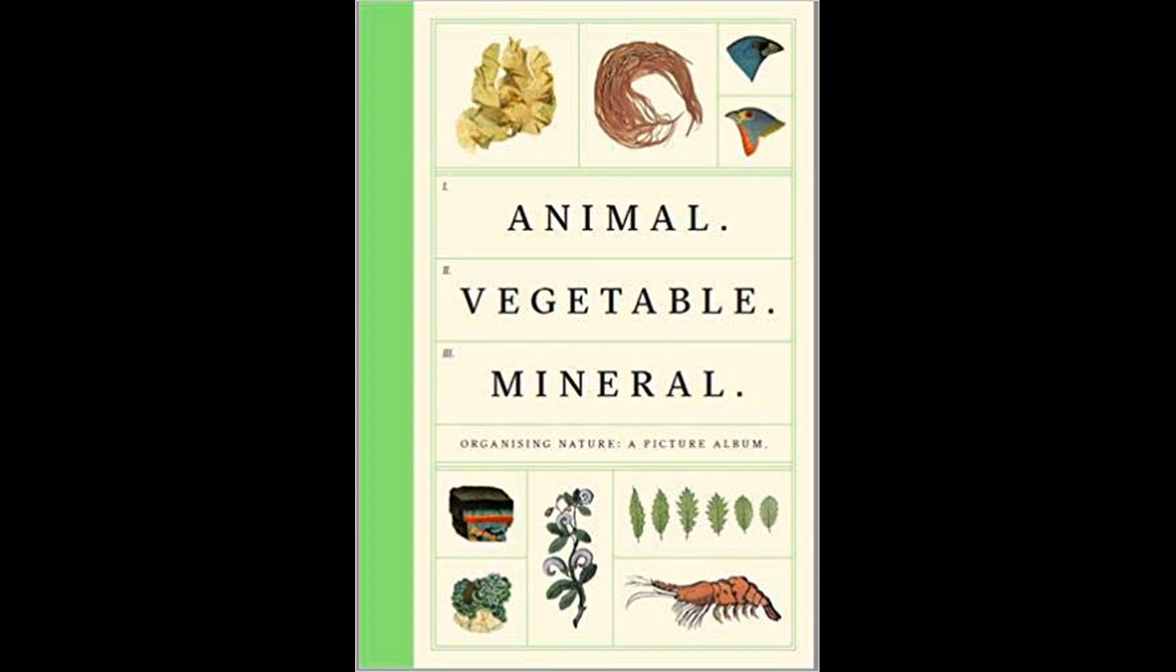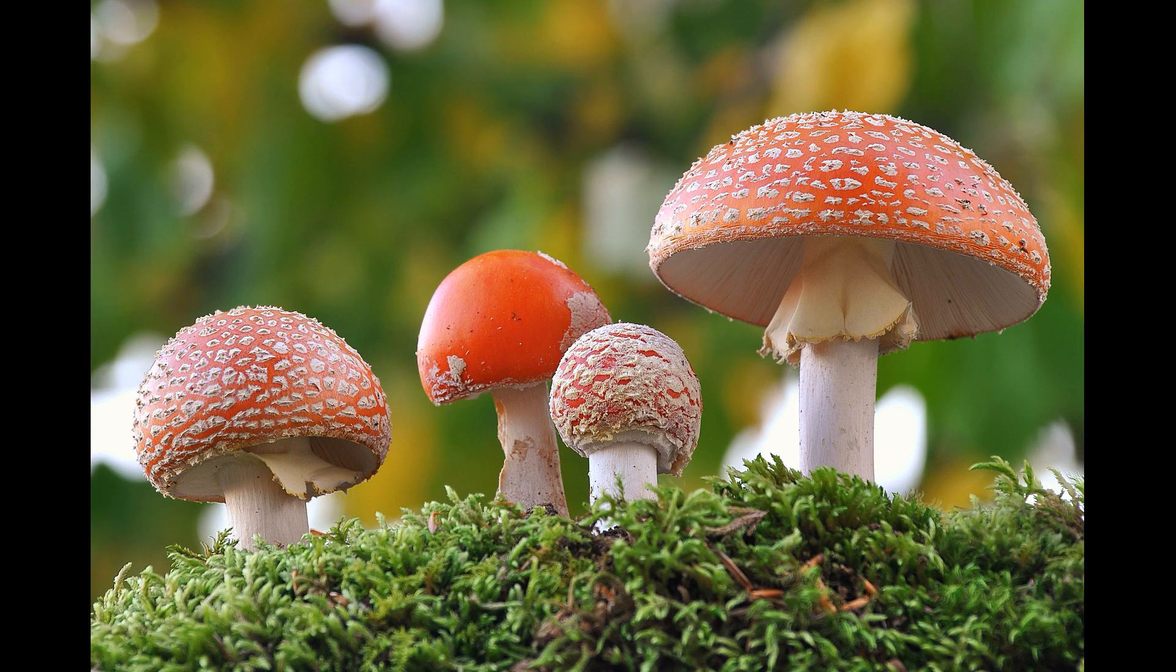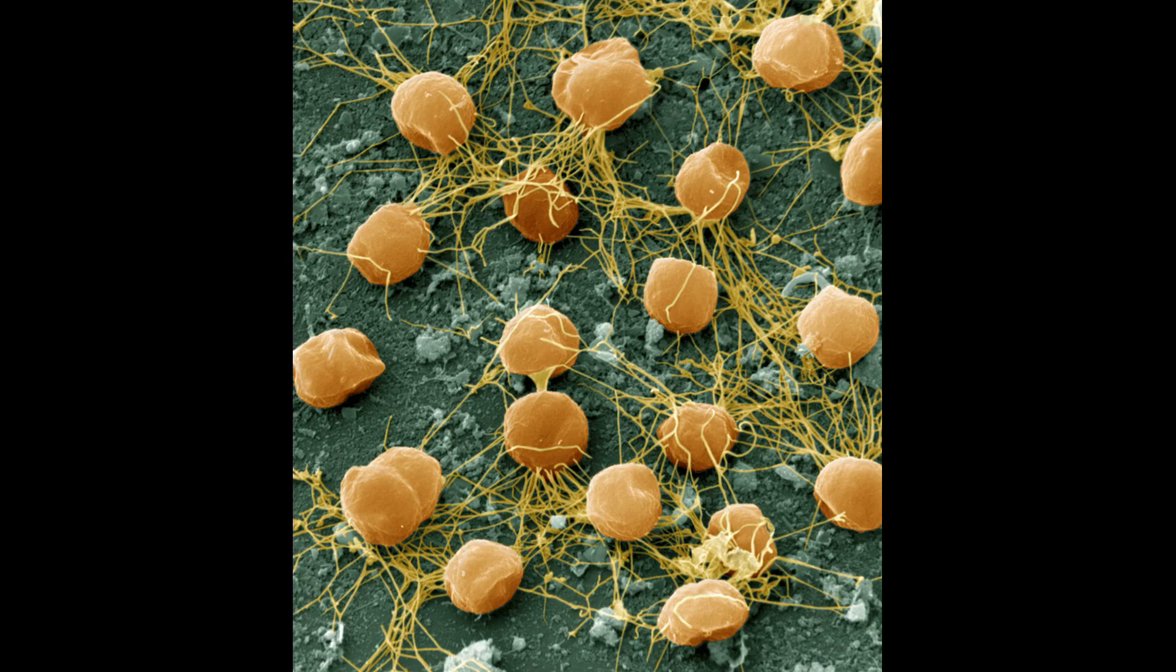Early systems grouped things as either animal, mineral, or vegetable, but that was when people didn't recognize the distinction between fungi and plants, and it was long before anyone knew about microbes or the true suite of biodiversity on Earth.